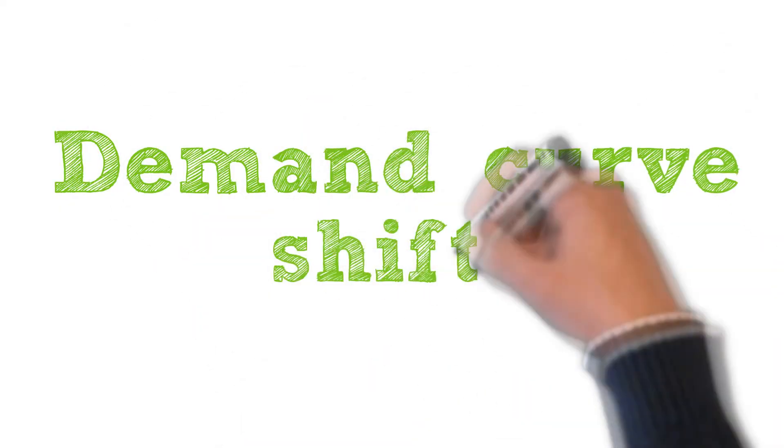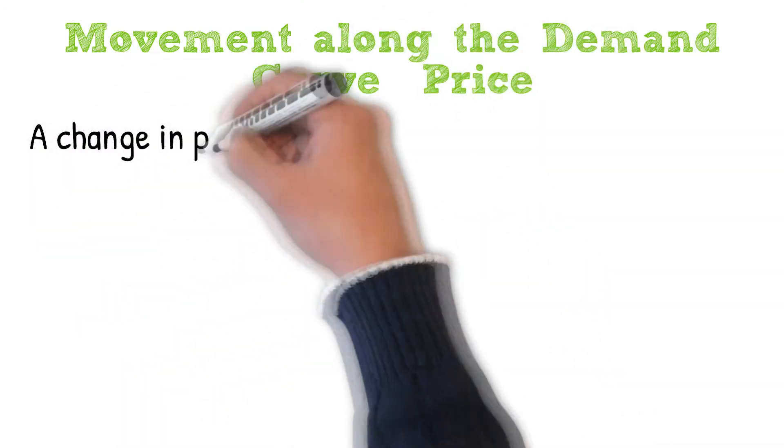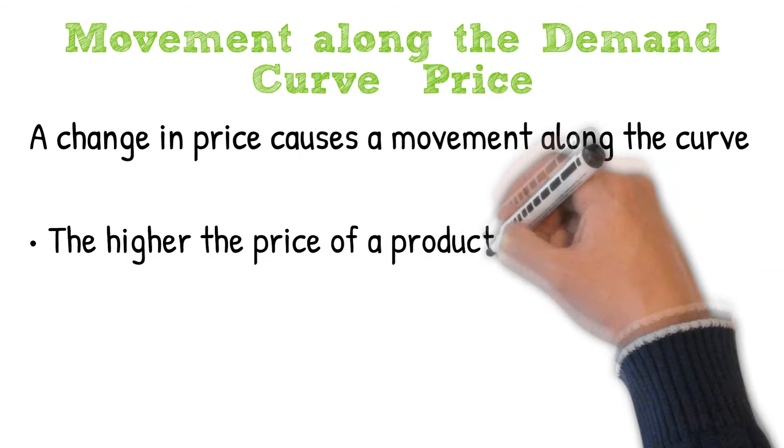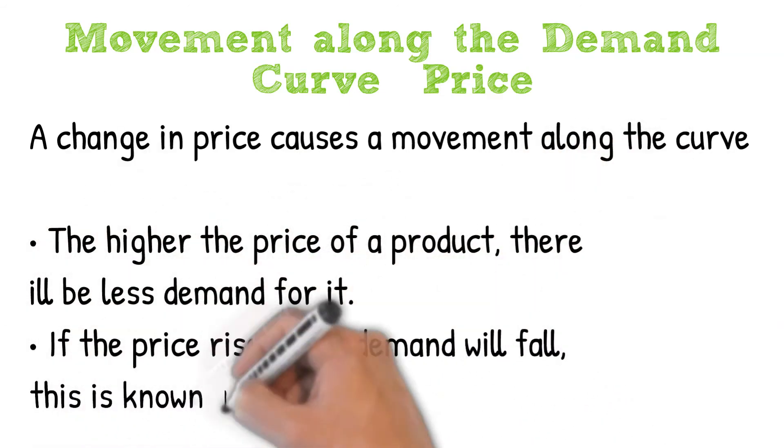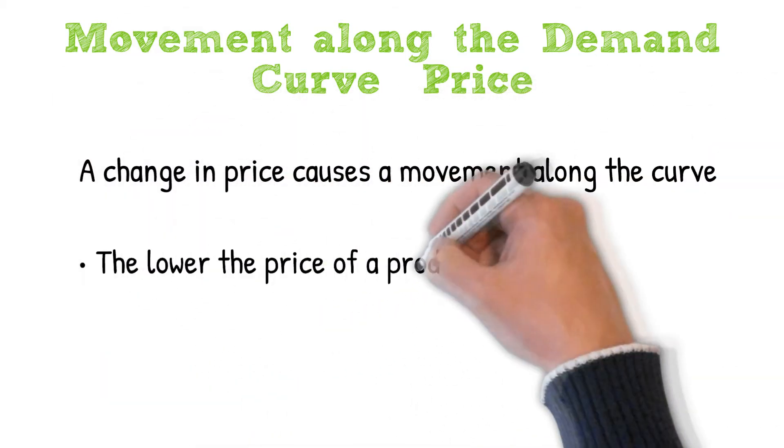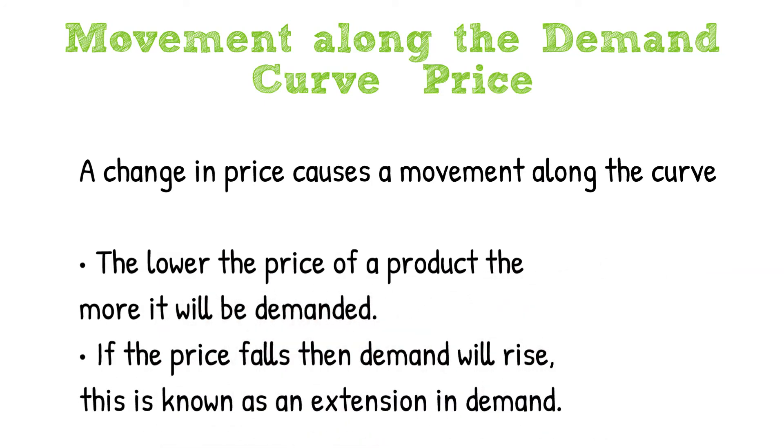Now I want to look at demand curve shifts. Let's start with movement along the demand curve. A change in price causes movement along the curve. The higher the price of a product, there will be less demanded for it. If the price rises, then demand will fall. This is known as contraction in demand. The lower the price of a product, the more it will be demanded. If the price falls, then demand will rise. This is known as an extension in demand.